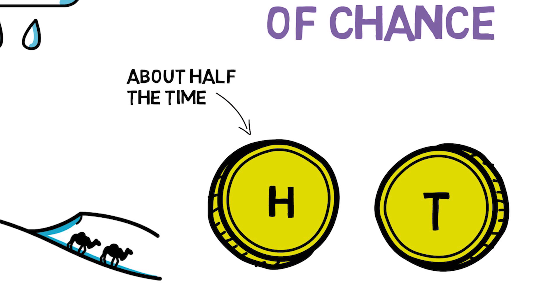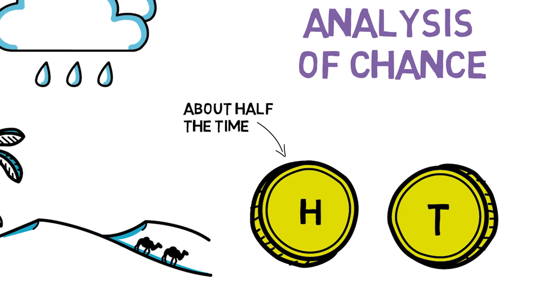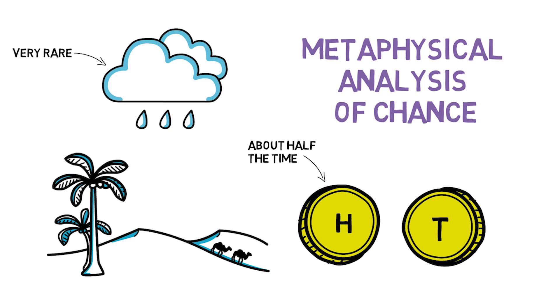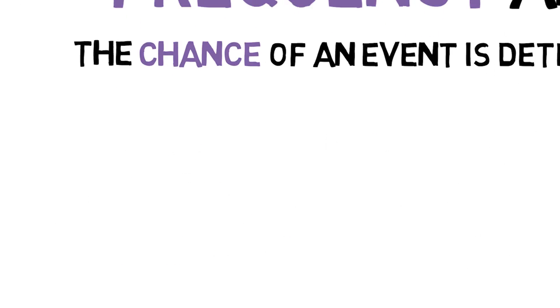A big advantage of this kind of frequency analysis of chance is that it makes it very clear why we take frequencies to provide good evidence with respect to chances. If you want to figure out the chance of it raining in the Mojave, a good strategy is to do some research about how often it rains in the Mojave. But this kind of frequency analysis also faces some serious problems.